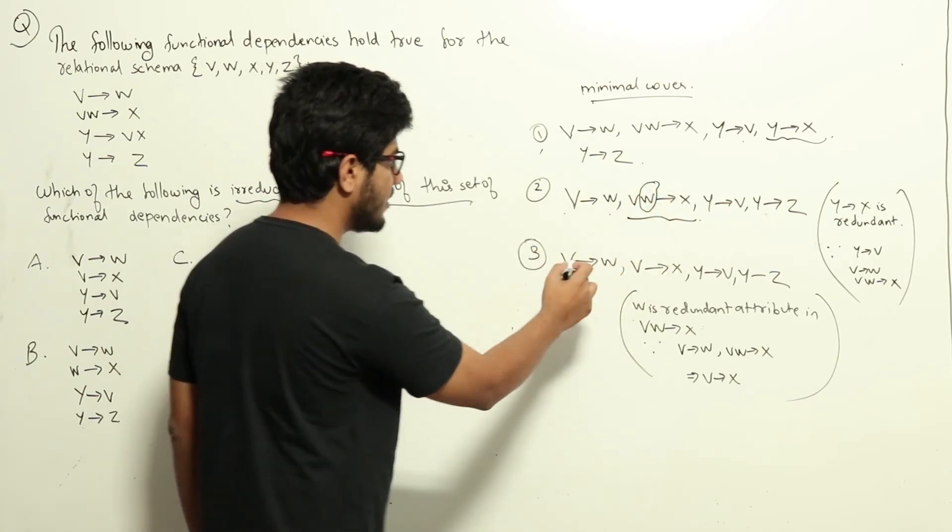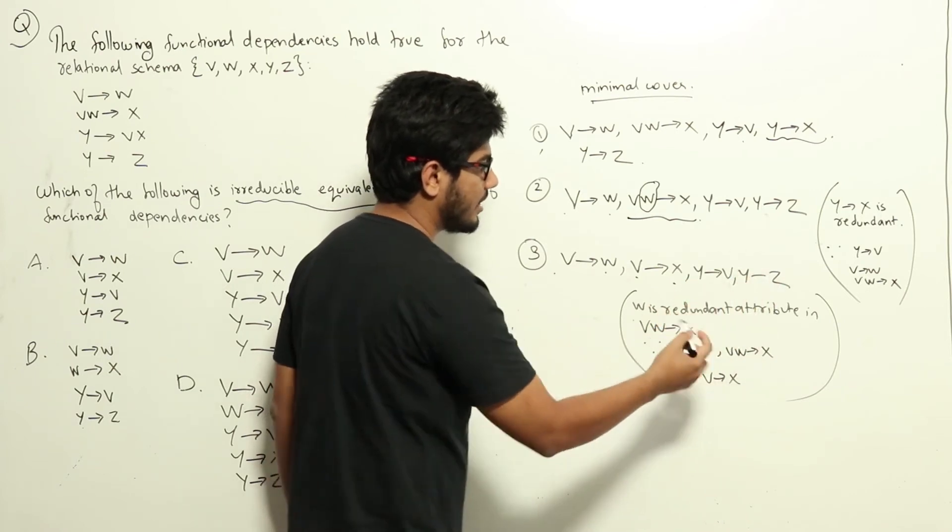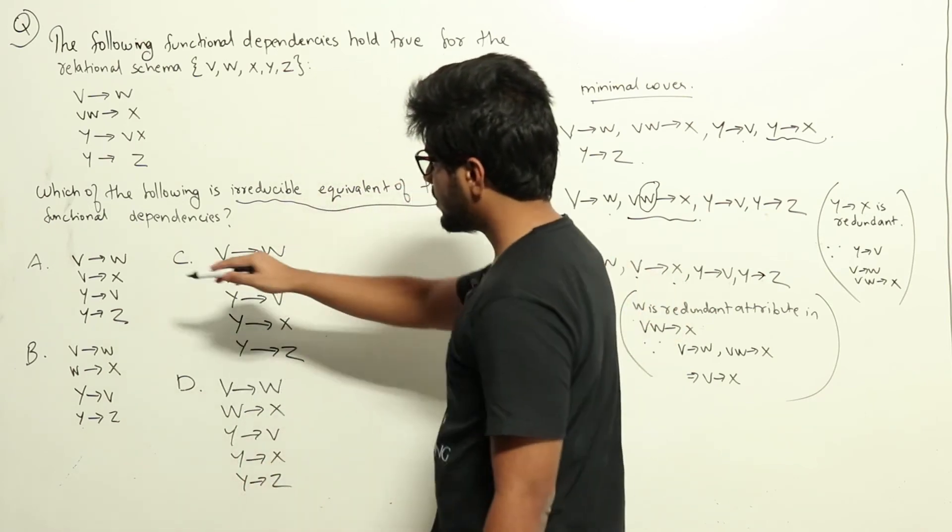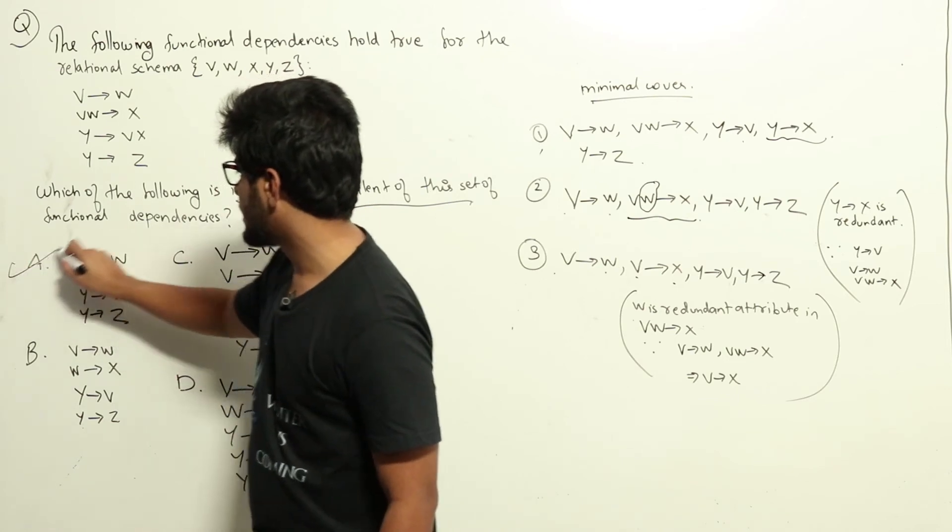What we get is V gives W, V gives X, Y gives V, and Y gives Z. Now looking at the options, option A is directly what I have got here, so option A is the correct answer.